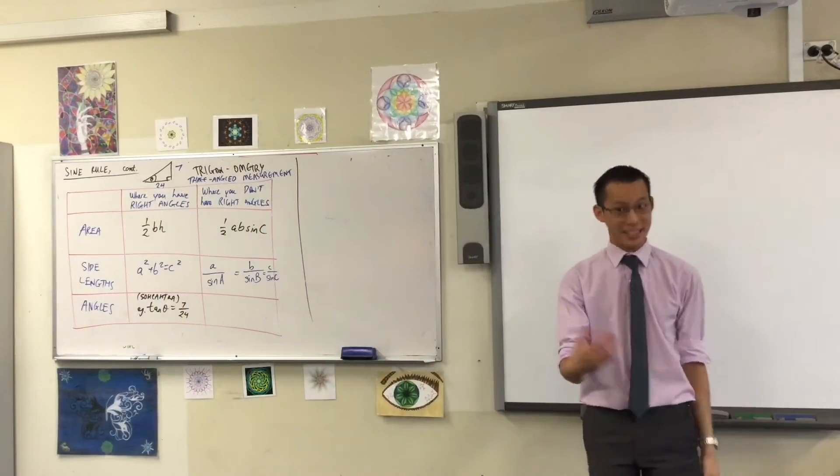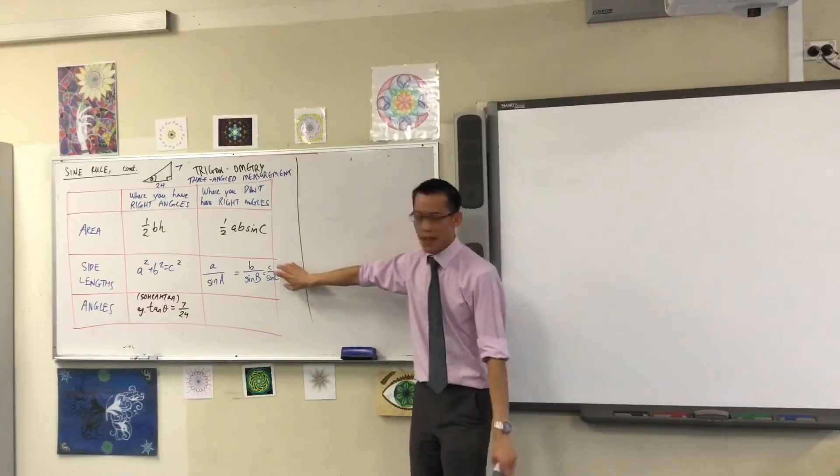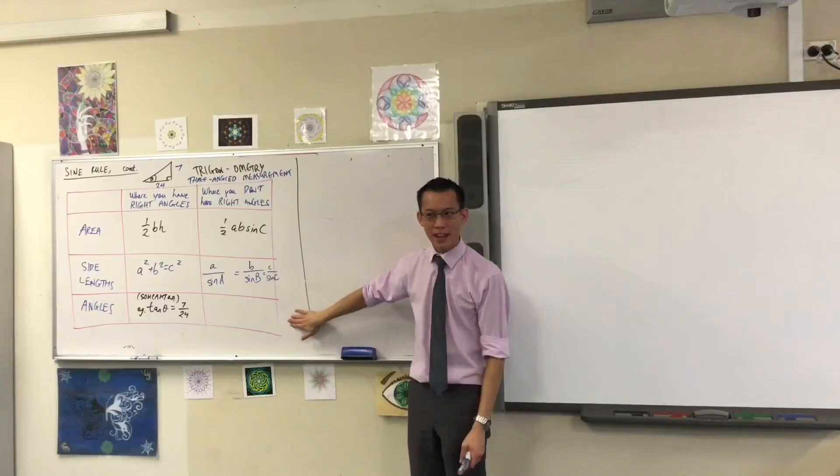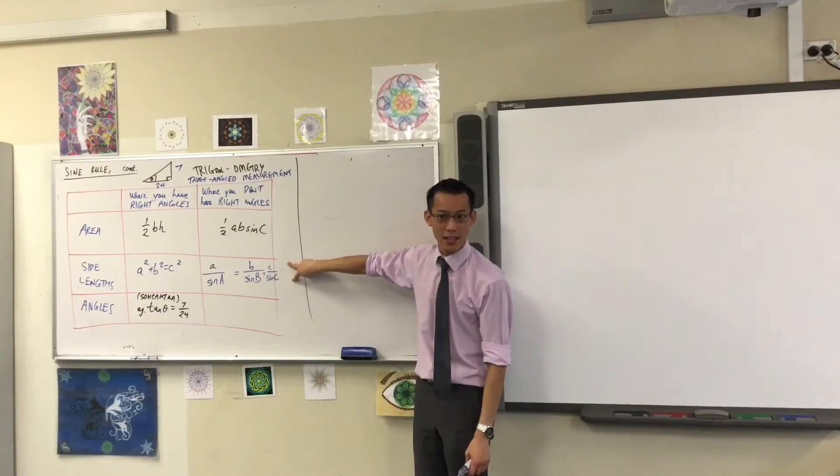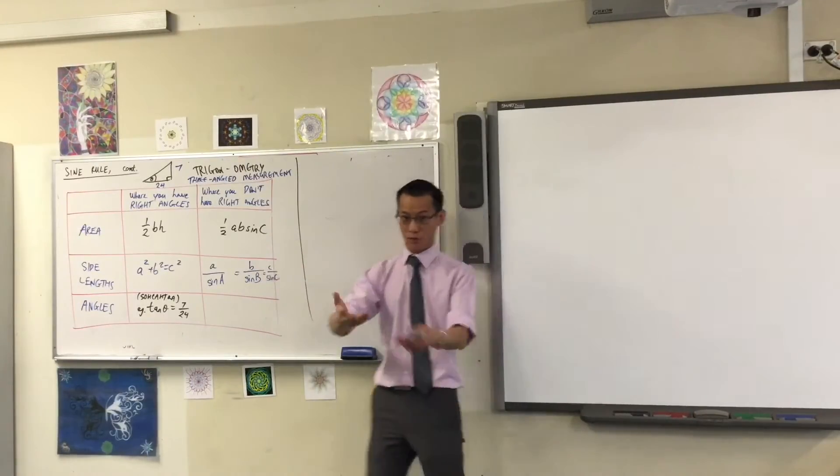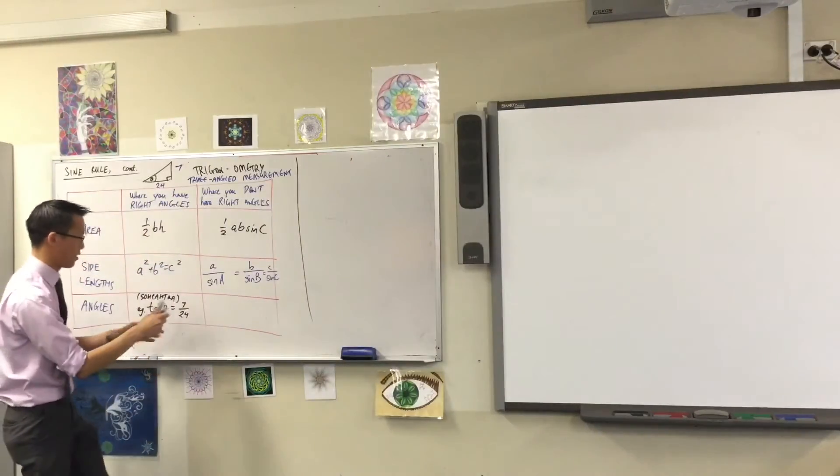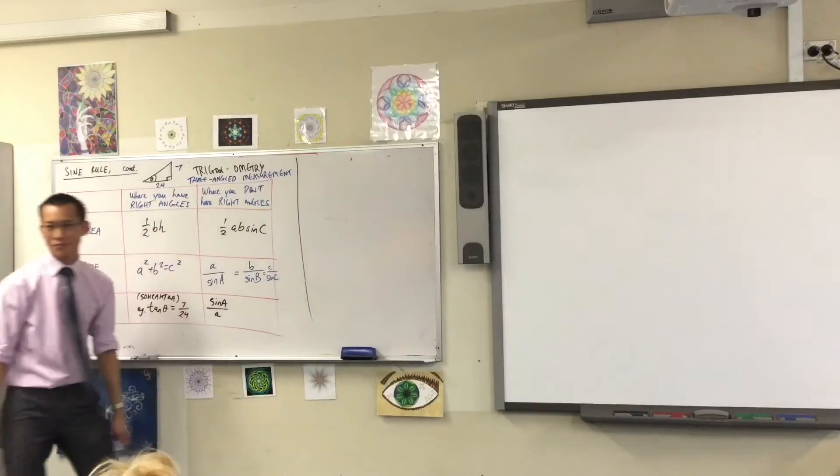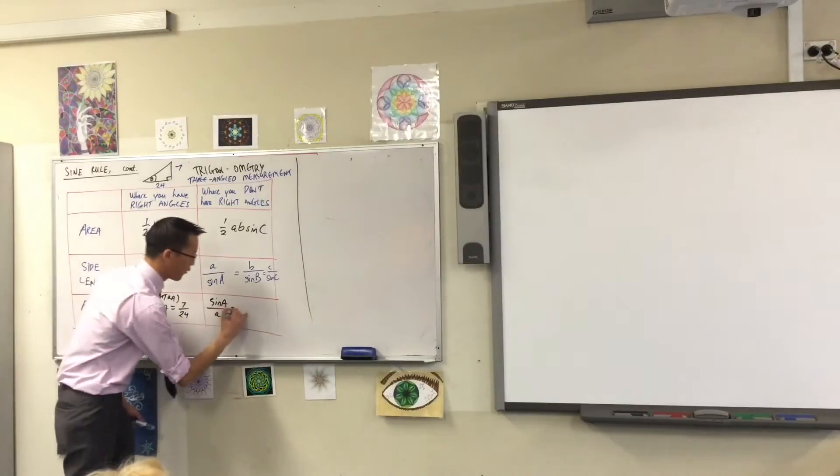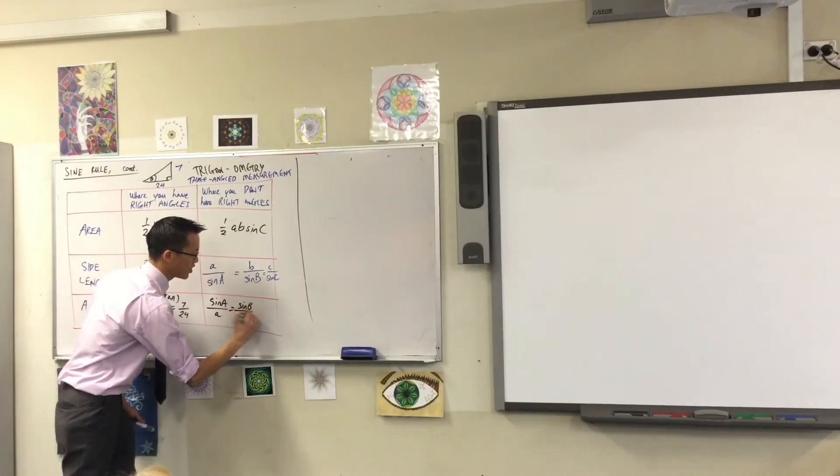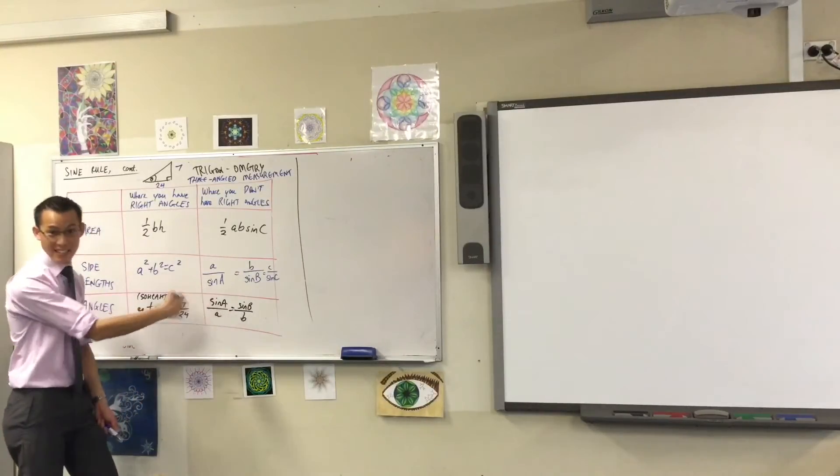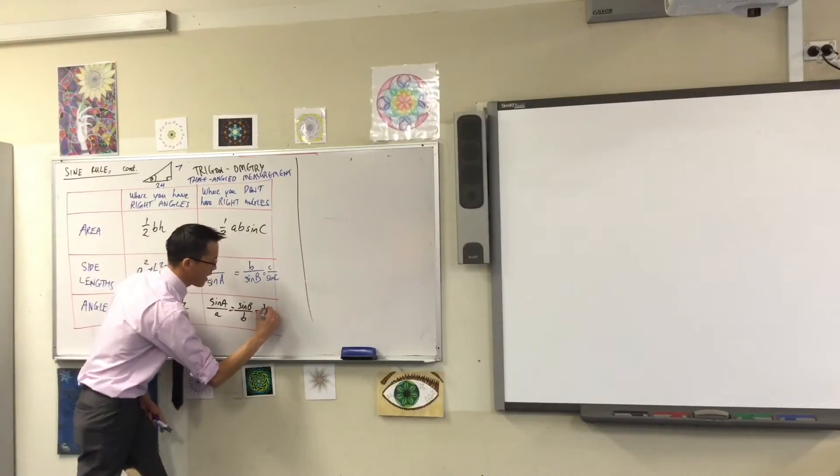But then we learned, yesterday, again, this sine rule that we proved, that we created, we can use it for angles as well. All you have to do is take this thing and turn it upside down. Just flip it upside down and you'll have, for example, sine A on A. It's the same formula, but if you flip it upside down, suddenly you have changed the subject and now it's much easier to find angles. You just sort of save yourself a step.